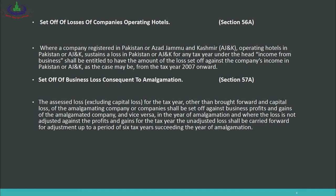Set-off of Losses of Companies Operating Hotels — Section 56A: Where a company registered in Pakistan operating hotels in Pakistan or AJK sustains a loss in Pakistan or AJK for any tax year under the head income from business, it shall be entitled to have the amount of the loss set off against the company's income in Pakistan or AJK, as the case may be, from tax year 2007 onward. So a hotel company operating in both Pakistan and AJK can set off a loss in one location against profits in the other.